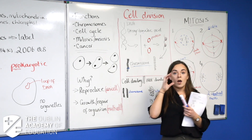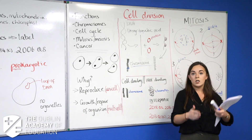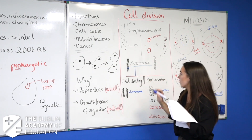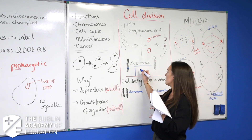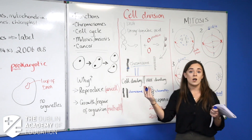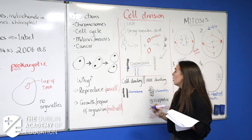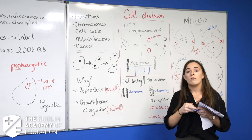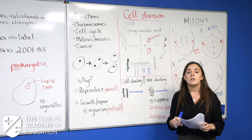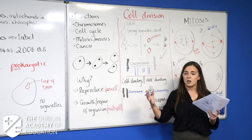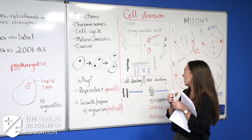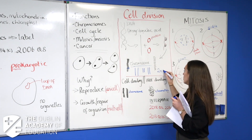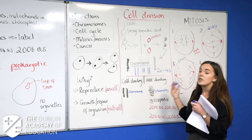Chromosomes can exist in pairs — two sets of chromosomes — in which case the organism is called diploid. 'Di' means 2. We represent that as 2N. Humans have 46 chromosomes in total, which means 23 pairs. So for humans, 2N equals 46.